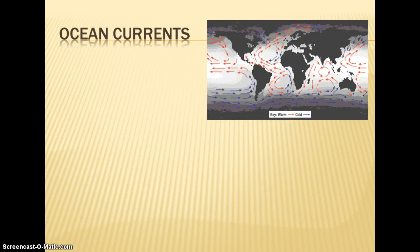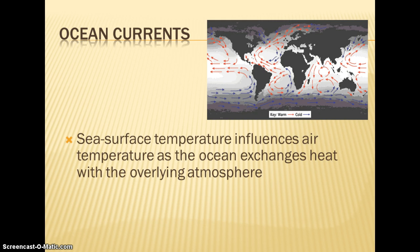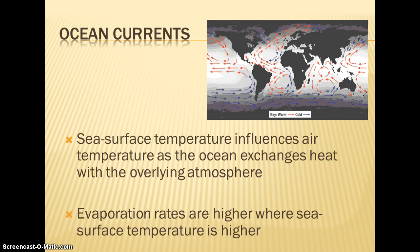Looking at ocean currents — for AP students this is a review, for IB this is new. Around the equator, shown by the red arrows, all currents that originate at the equator are warm water and carry that warm water towards both the North and South Poles. As it gets towards the poles, you see blue arrows — those are cold water currents. The temperature of the ocean surface influences air temperature and vice versa, and heat is transferred both through the oceans and the air, back and forth. Where sea surface temperature is higher, you'll have higher rates of evaporation, affecting moisture and climate patterns.